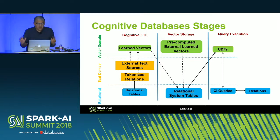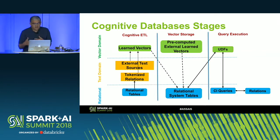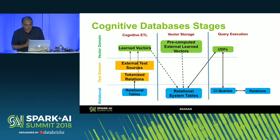Here is a three-stage summary of the implementation. We have an ETL stage where textification takes place — data in a relational table is converted into the text domain, optionally combined with an external text source. The word embedding model then computes learned vectors, which are stored in a relational system table. This can also be extended using other precomputed models. These vectors are then used by the UDF in the cognitive intelligence queries, which operate on input relations and return relations as output.